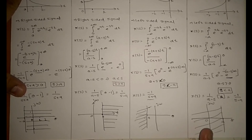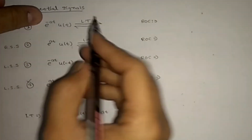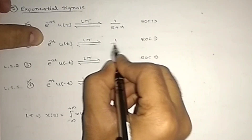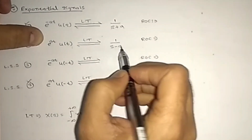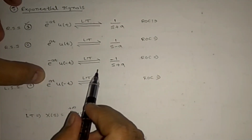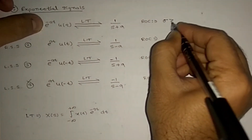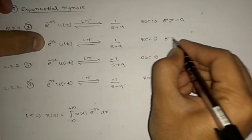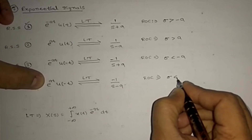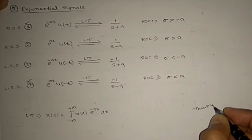In conclusion: e^(-at)u(t) is a right-sided signal with Laplace transform 1/(s+a), ROC: sigma > −a. e^(at)u(t) is a right-sided signal with transform 1/(s-a), ROC: sigma > a. e^(-at)u(-t) is a left-sided signal with transform −1/(s+a), ROC: sigma < −a. e^(at)u(-t) is a left-sided signal with transform −1/(s-a), ROC: sigma < a. These are the 4 standard exponential signal Laplace transforms to remember. Thank you.